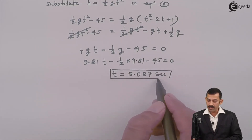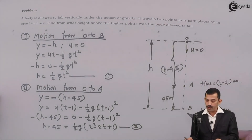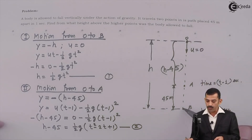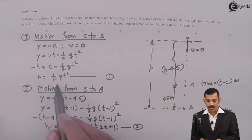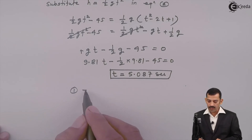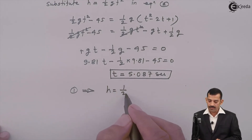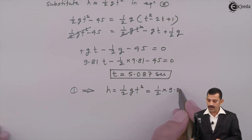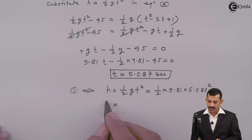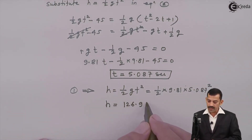That means it takes 5.087 seconds to travel from position O to position B. Now substituting this value of T into equation number 1 to find H: H equals half g T squared equals half times 9.81 times (5.087) squared. Calculating this using a calculator, H comes out to be 126.94 meters.